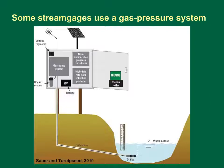This schematic diagram shows a stream gauge with a gas pressure system. In this type of gauge, gas is bubbled out of an orifice near the bottom of the stream, and the amount of pressure needed to maintain flow of the gas indicates the depth of water above the orifice. A non-submersible pressure transducer is used to translate pressure measurements to an electronic record of stream stage. As with the previous stream gauge, the electronics are powered by a solar battery system, and measurement results are transmitted via satellite or cell phone. This stream gauge has an outside staff gauge mounted to the stream that is used to manually check the water level to help calibrate the pressure sensor measurement.